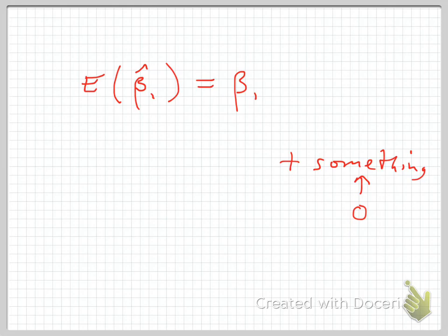Under the set of assumptions we have, the slope coefficient on x1 is an unbiased estimate of the population slope. The crucial assumptions are all those least squares assumptions, and in particular that the error term is uncorrelated with x.